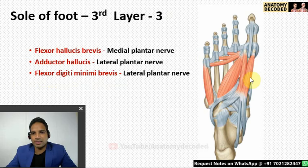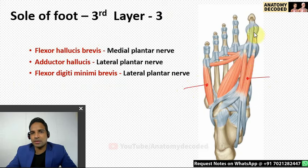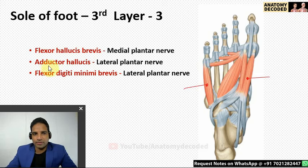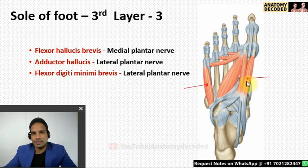In the third layer of the sole there are three muscles: flexor hallucis brevis, flexor digiti minimi brevis, and adductor hallucis (which has a transverse head and an oblique head). This layer can be compared with the first layer: the first layer had abductors to the great toe and little toe, while here there are flexors. Flexor hallucis brevis is on the medial aspect and is supplied by the medial plantar nerve; the other muscles are supplied by the lateral plantar nerve.